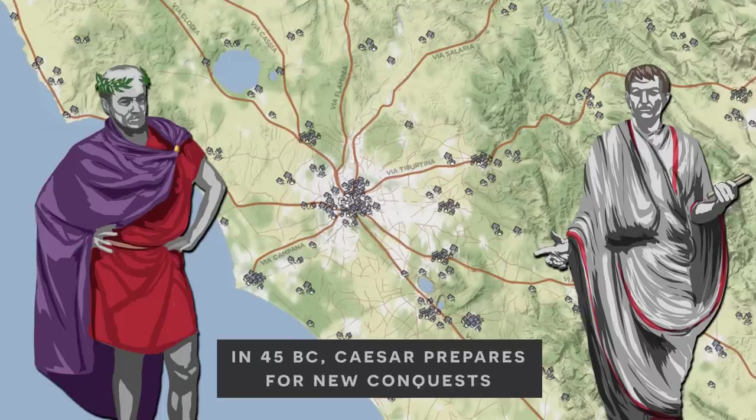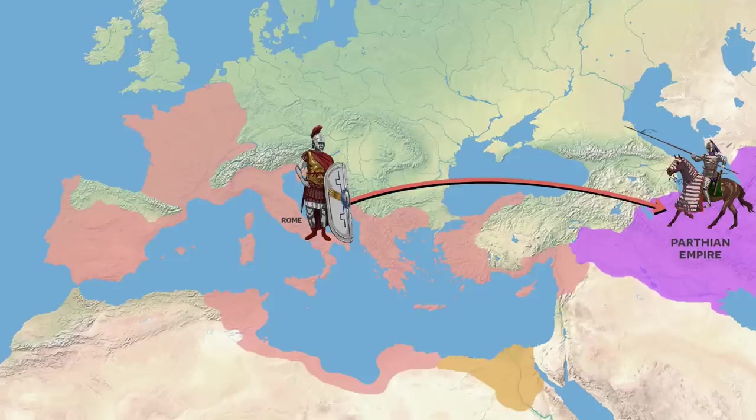In 45 BC, we see Julius Caesar begin to plan for new military actions. The primary target? Parthia.